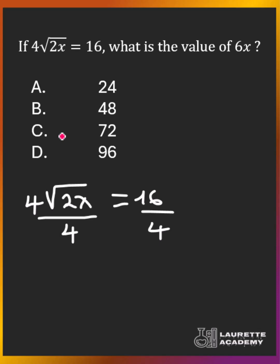On the left hand side, 4 will cancel 4. On the right hand side, 16 divided by 4 is 4. And so we have that the square root of 2x is equal to 4. Now we have the variable x under the square root sign.